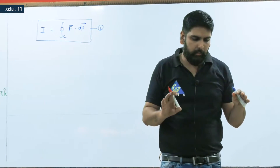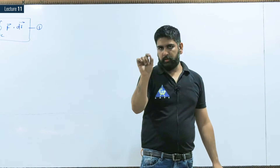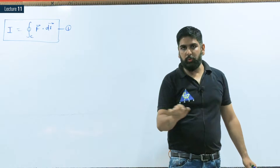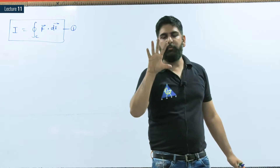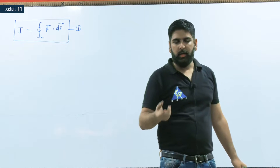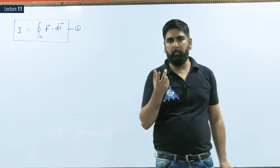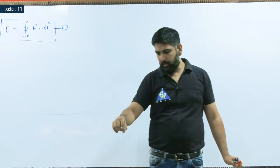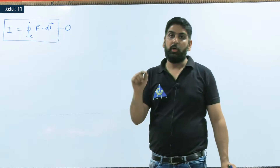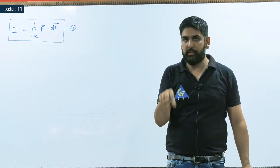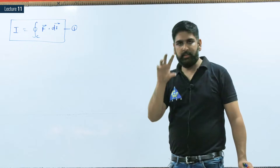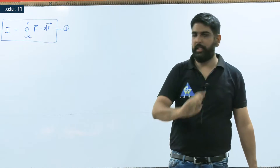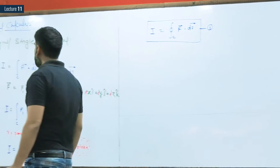Remember: if the line integral is closed, it forms a surface. Think of taking four matchsticks from a matchbox and forming a square — the square is nothing but closed lines, and that square forms a surface. When the surface closes, it creates a volume. So closing a line creates a surface, and closing a surface creates a volume.